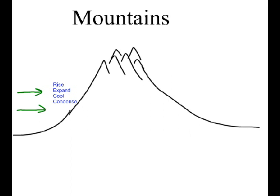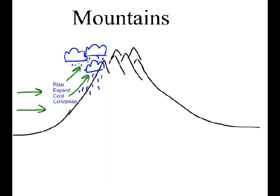Whenever air rises it's going to expand. As it expands it cools, and we have condensation. So on this side of the mountain we tend to have a lot of clouds, and if you have a lot of clouds on this side of the mountain that's where you're going to get most of your rain — a lot of moisture. The moisture that is in the air is going to be squeezed out of the air. On this side of the mountain we're going to have a lot more moisture than the other.